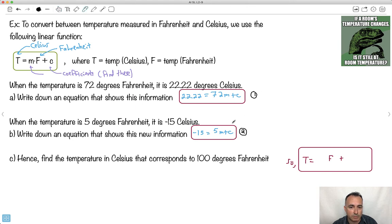They say, hence or otherwise, find the temperature in Celsius that corresponds to 100 degrees Fahrenheit. Well, it really helps to have a model first. So there's a bunch of ways of doing this, tons of ways of doing it. Let me show you just one way. We could do it by hand if you really wanted to. You could say, I'm going to use these two equations because notice I have two equations with two unknowns. 22.22 equals 72m plus c, and I'm also having to work with -15 equals 5m plus c. You could do it by hand, sure, and you could do some magic and you would end up with m equals something and c equals something. You could do it that way, you absolutely could.